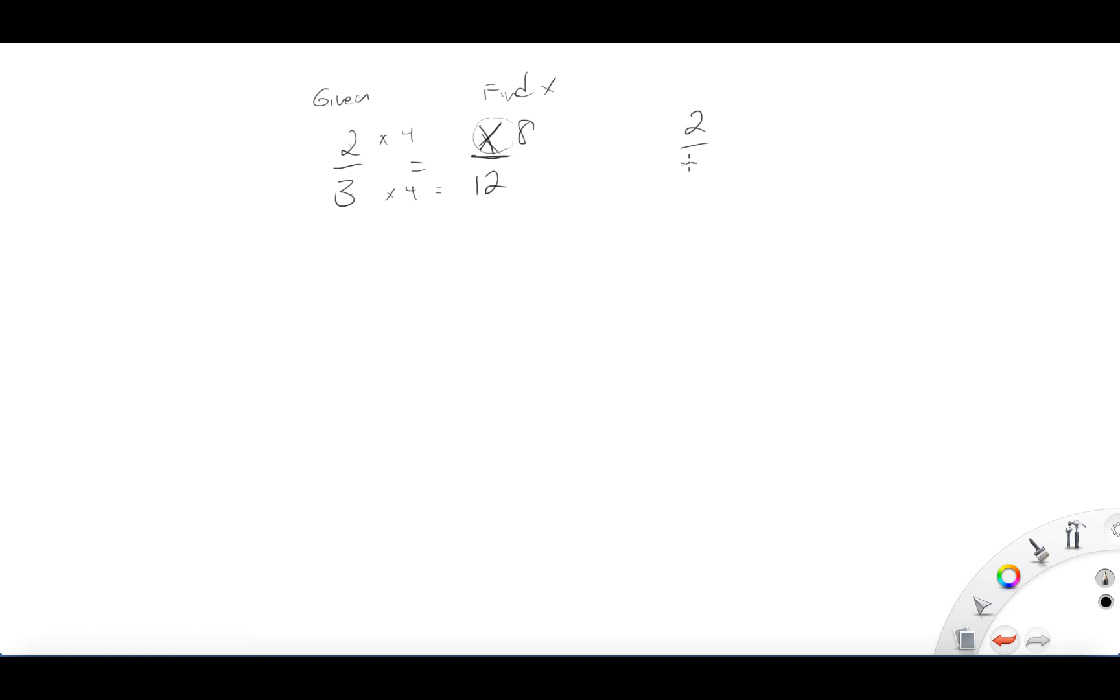Or here's another way to do it. I can cross multiply and say 3x equals 2 times 12 is 24. I can divide by 3. I can divide by 3, x equals 8.